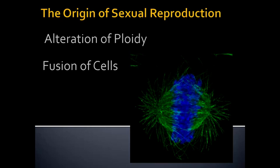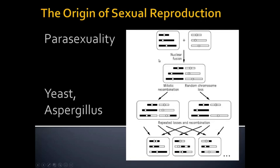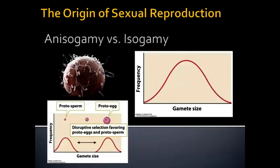There are a few organisms that show an intermediate stage or can reproduce both sexually and asexually. Alteration of ploidy is one intermediate stage — at one stage of life you're diploid, at another you're haploid. Fusion of cells is kind of like joining individuals but without making a truly new separate individual. Some fungi have parasexuality, which looks like a mix between mitosis and meiosis with some recombination. Yeast and Aspergillus can go through these semi-hybrid forms between sexual and asexual reproduction.